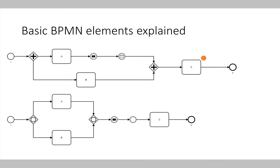The first process has ended, but the second process is still running — for example, it's currently in the state of executing activity C. If we write down the names of the different elements where the token moved along, we get the so-called process trace.